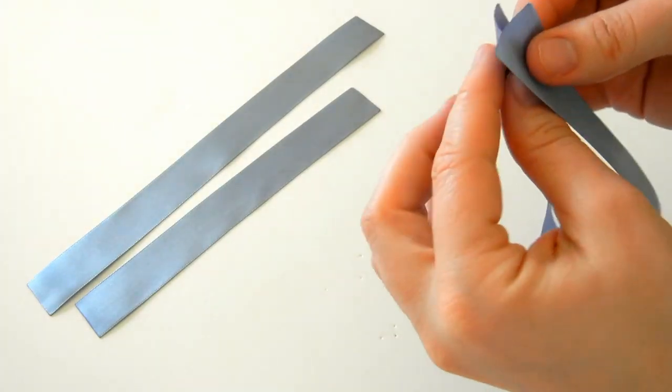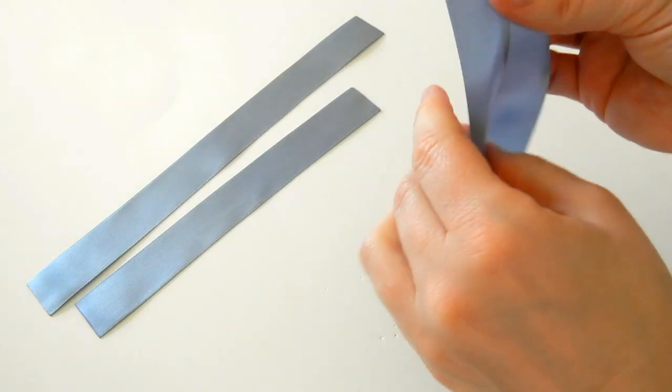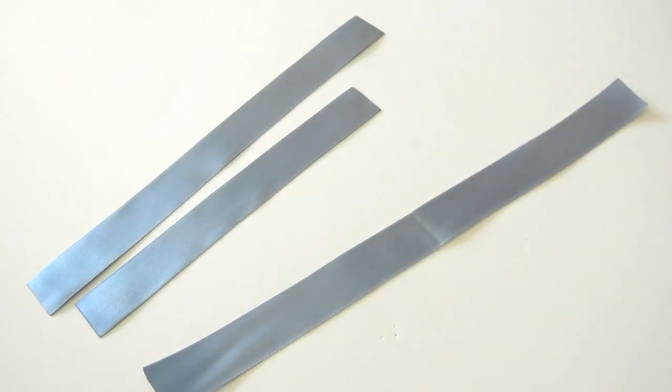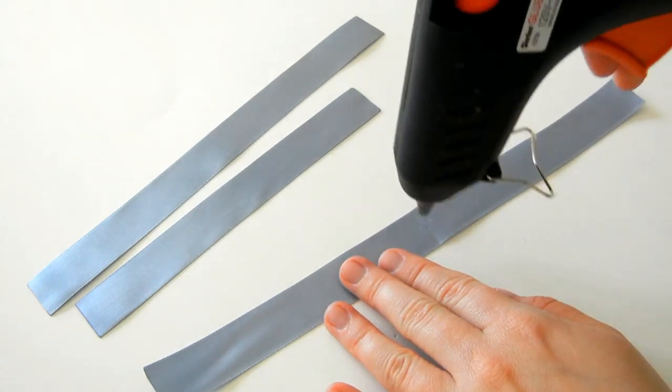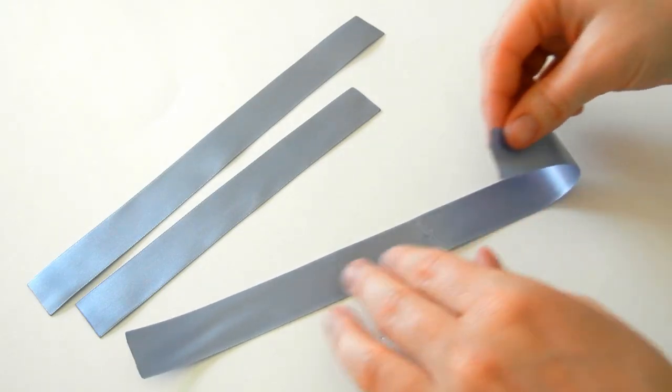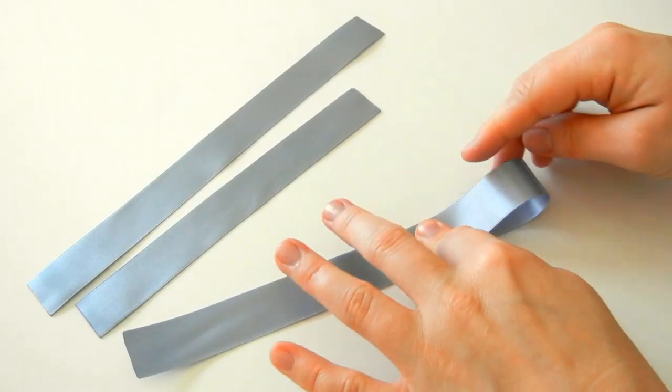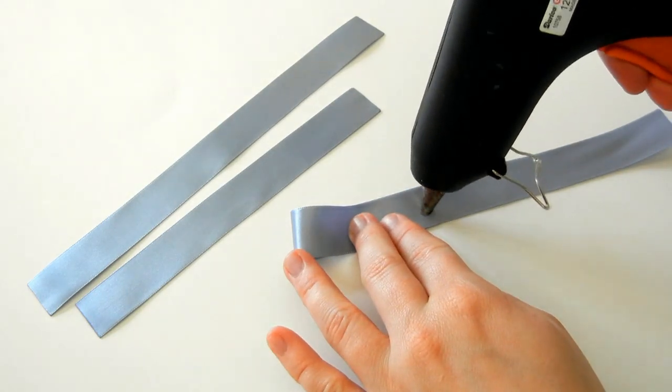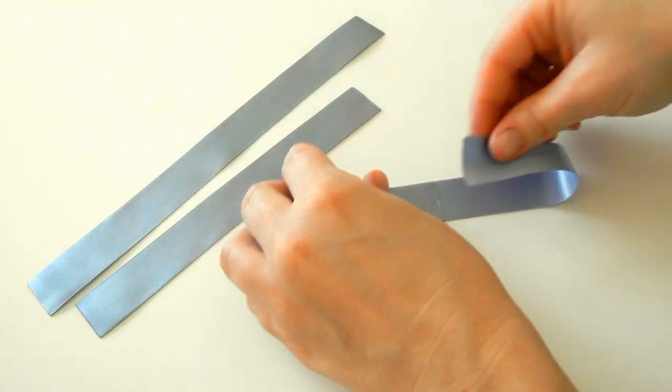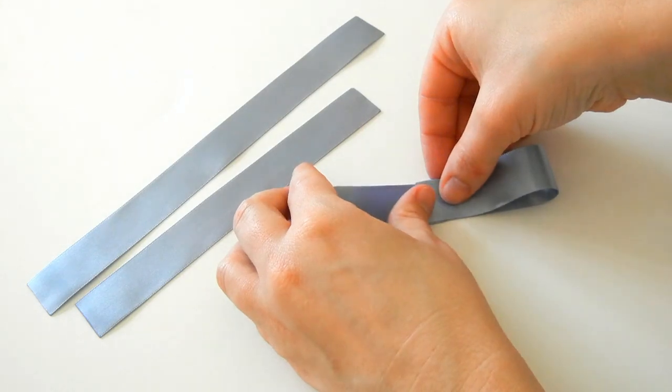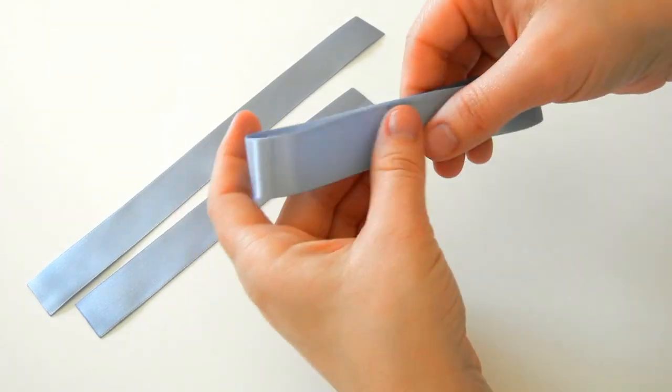What we're going to do is the same thing that we did in the other one. Fold it in half, pinch, find your middle. Then we're going to just place a dab of glue and overlap just a little bit with your ribbon. It's very important that you make sure that your edges are straight, the edges of the ribbon.